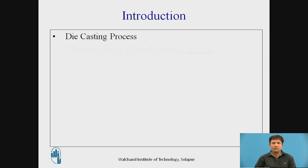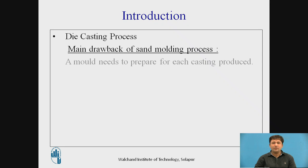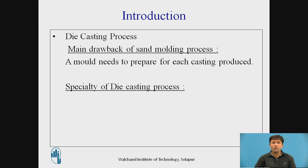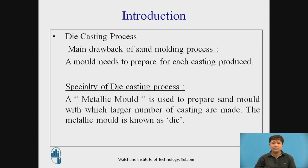First, introduction. The Die Casting process has an advantage over Sand Molding. The main drawback of Sand Molding process is that a mold needs to be prepared for each casting produced. The specialty of Die Casting process, which is also called a Specialized Casting Process, is that a metallic mold is used with which a larger number of castings are made. The metallic mold is also called a Die. So here we don't need to prepare the mold again and again.